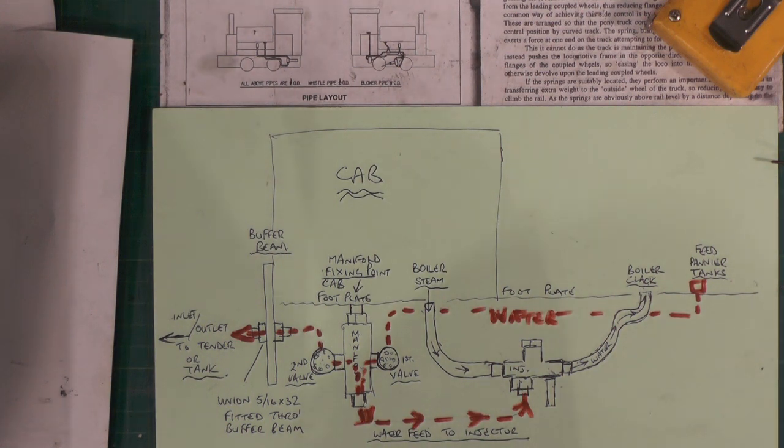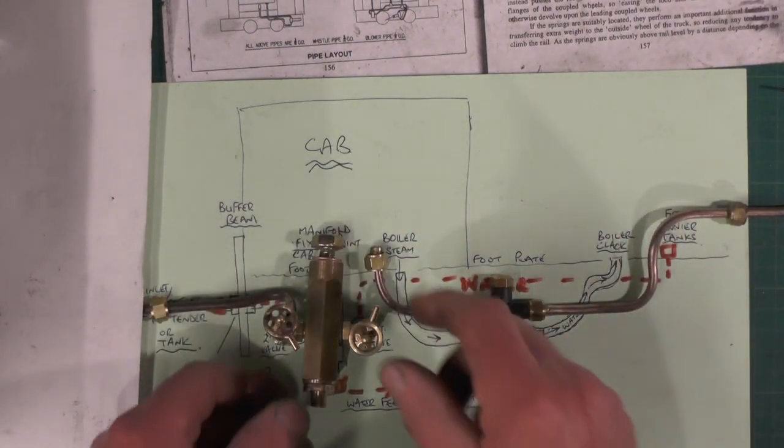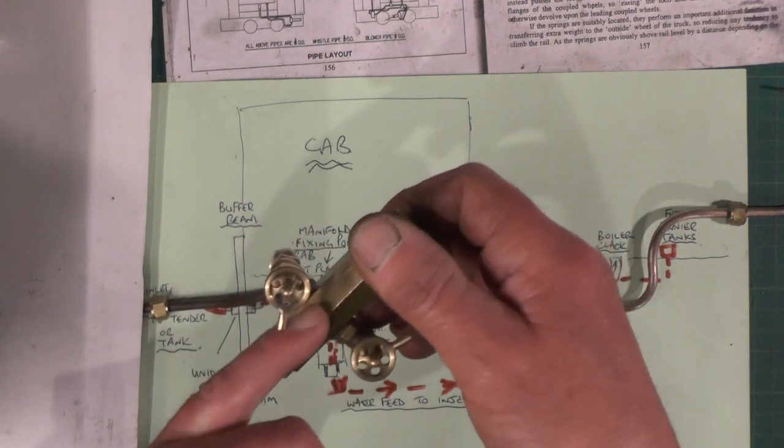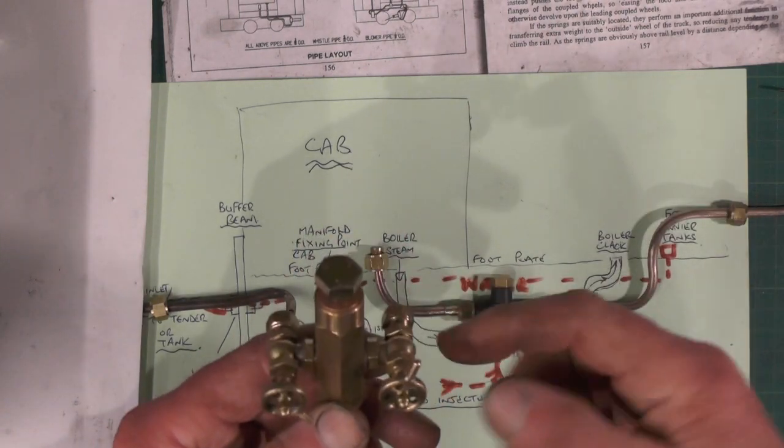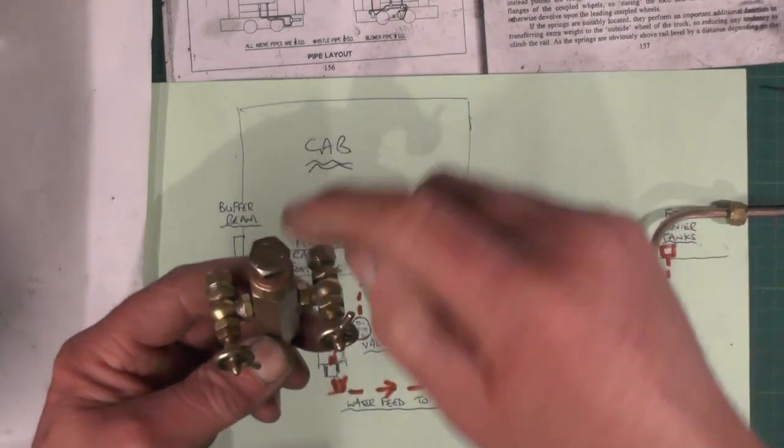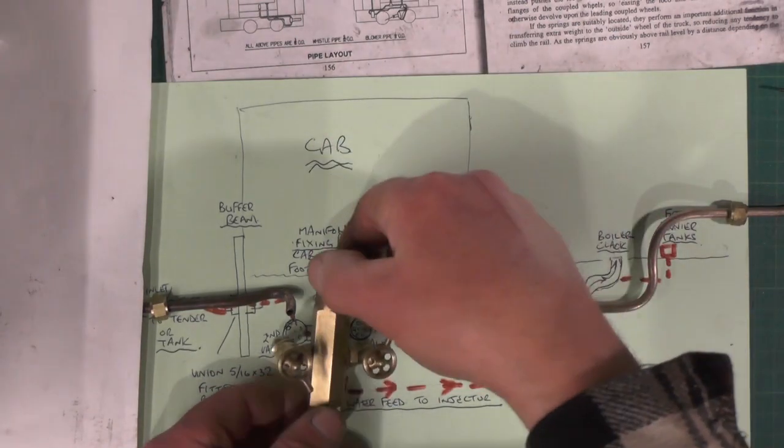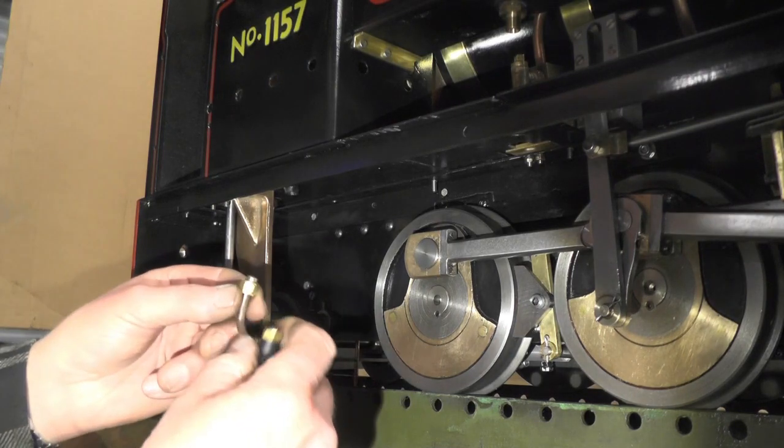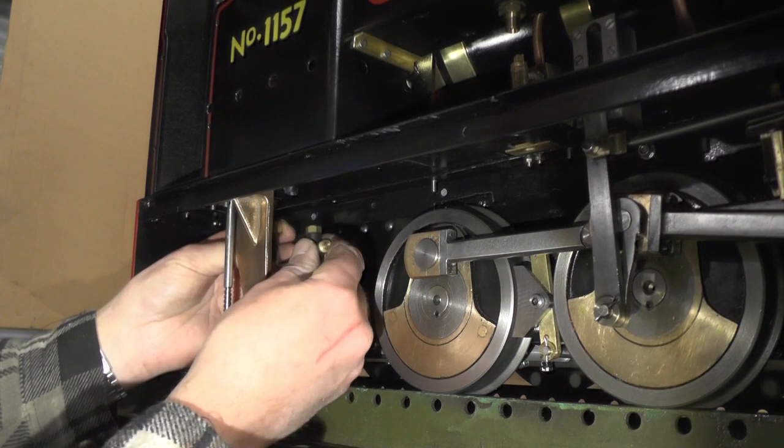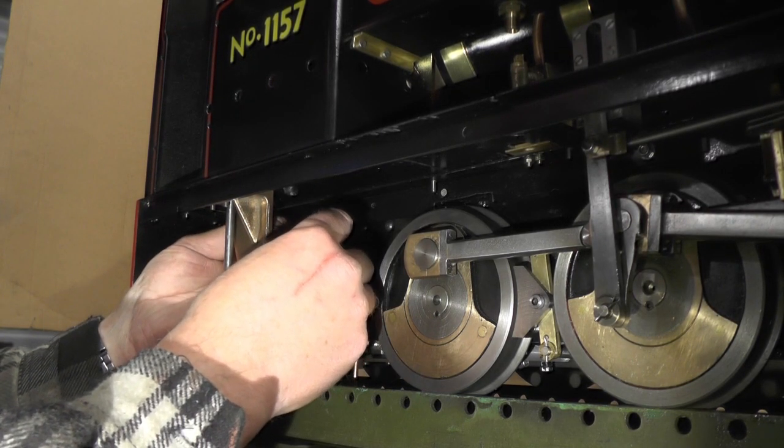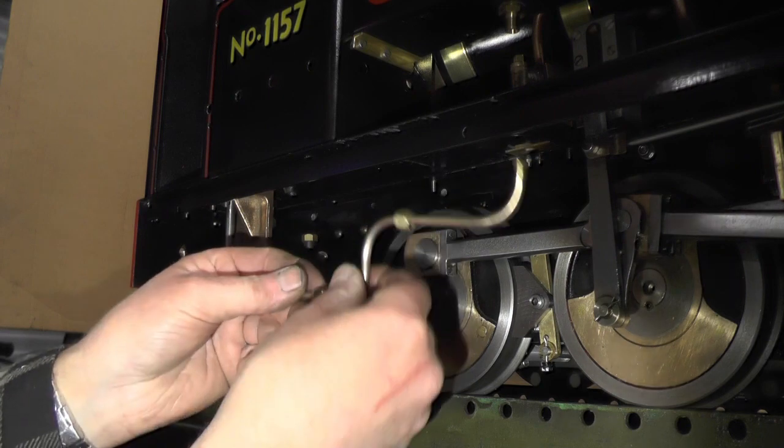I've got the manifold made now, most of the pipes, and I'm ready for fitting them to the loco. My manifold, I've drilled a hole up the center where the outlet port is, then I've cross-drilled them where the valves fit. I'm holding it onto my cab floor with just a bolt into the manifold through the cab floor like that. I'll start off by fitting this pipe to the steam feed from the boiler, then this pipe is going to fit to the outlet feed to the clack valve.